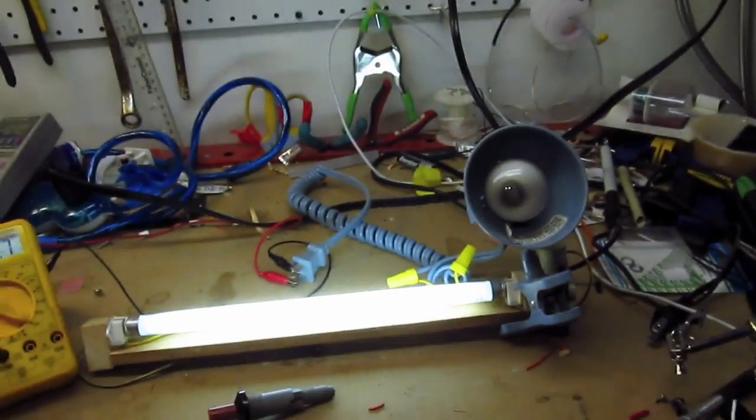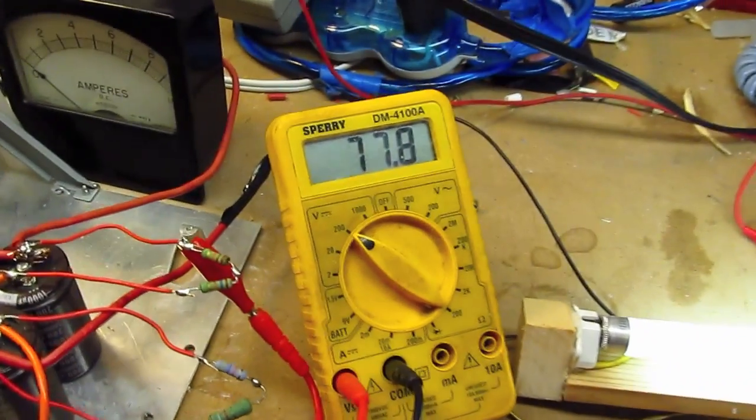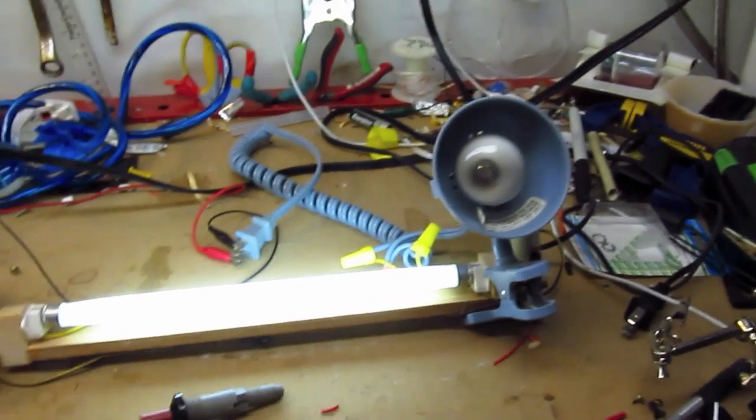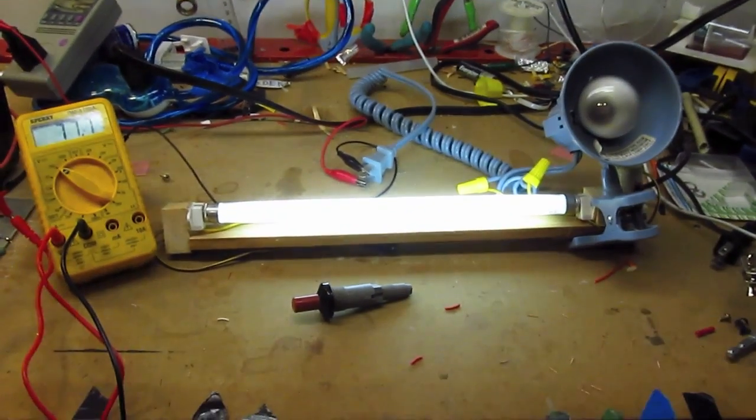So there you have it, a fluorescent tube running on 77.8 volts DC with a resistive ballast. That's all, thanks for watching.